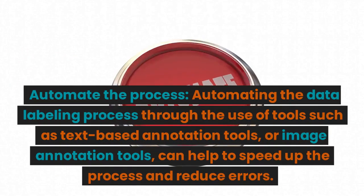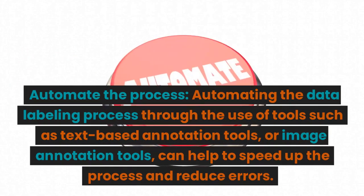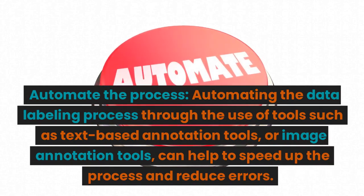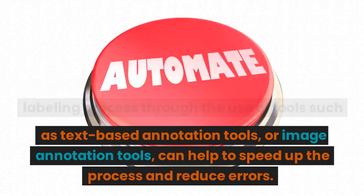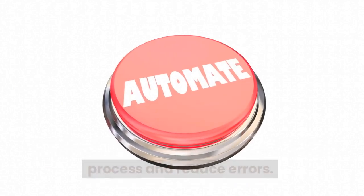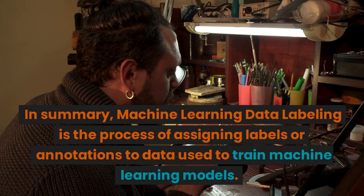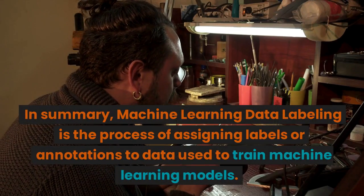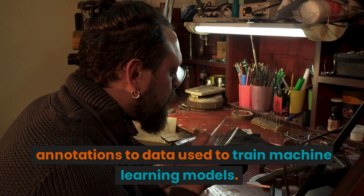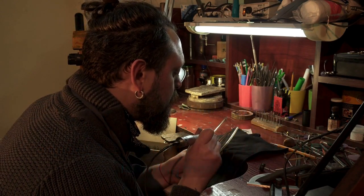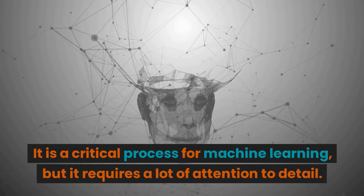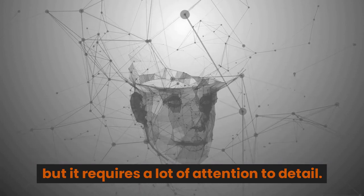Automate the process. Automating the data labeling process through the use of tools such as text-based annotation tools or image annotation tools can help to speed up the process and reduce errors. In summary, machine learning data labeling is the process of assigning labels or annotations to data used to train machine learning models. It is a critical process for machine learning, but it requires a lot of attention to detail.